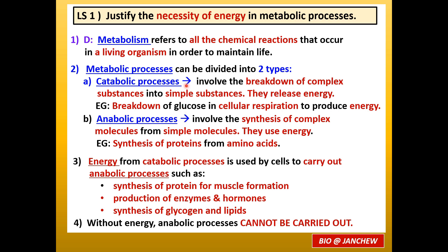Catabolic processes involve the breakdown of complex substances into simpler substances, and these processes release energy. When complex substances like glucose are broken down into simpler substances like carbon dioxide and water through the process of cellular respiration, energy is released. This energy from the breakdown of glucose in cellular respiration is stored in the form of ATP and can be used for anabolic processes.